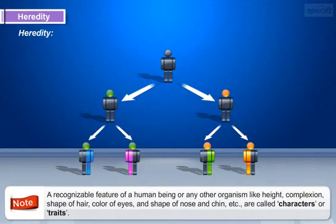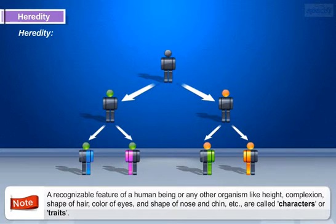Here we should note that a recognizable feature of a human being or any other organism — like height, complexion, shape of hair, color of eyes, shape of nose, and chin — are called characters or traits.